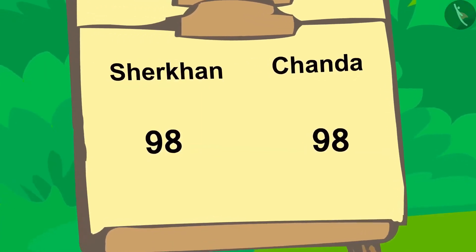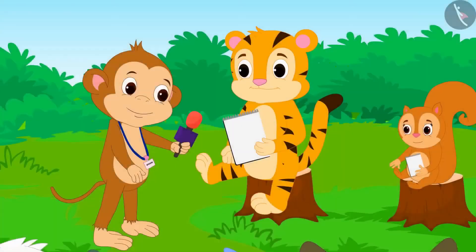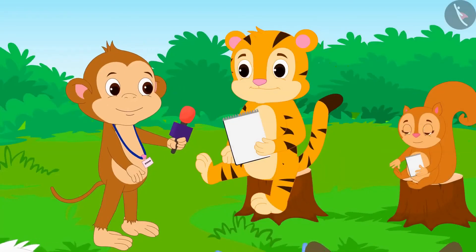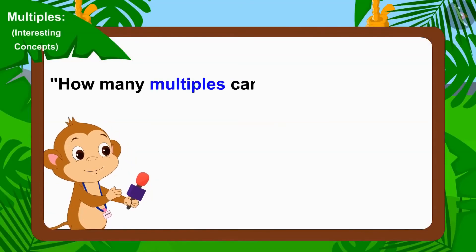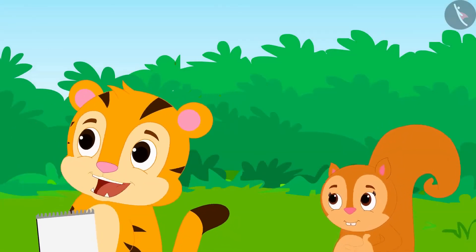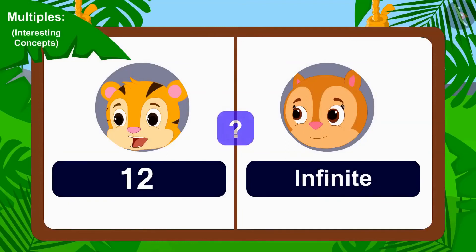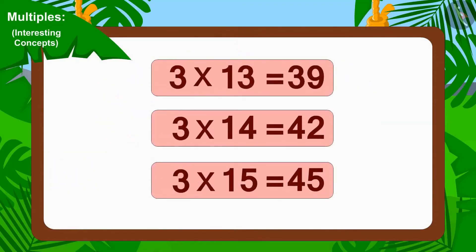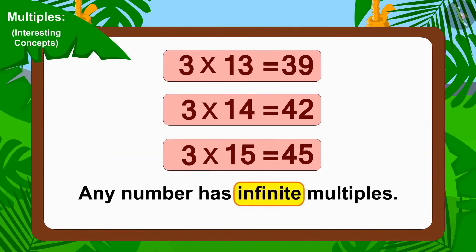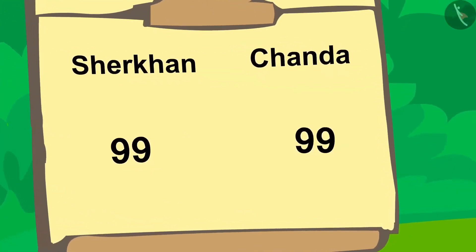Sheer Khan is now one point ahead of Chanda. Babban asked the next question: How many multiples can any number have? Sheer Khan immediately replied 12, and Chanda answered infinite. We can multiply any number with infinitely many numbers, so any number has infinite multiples. This means Chanda's answer is correct. Once again, the scores are equal.